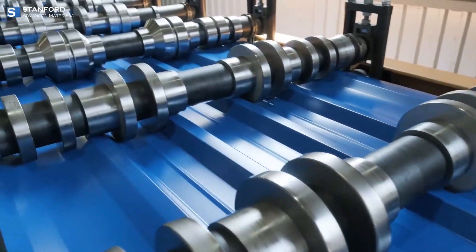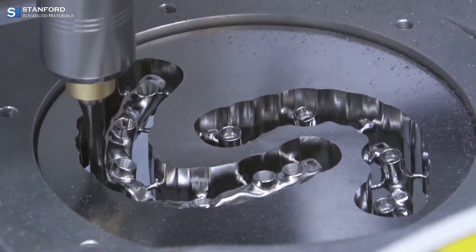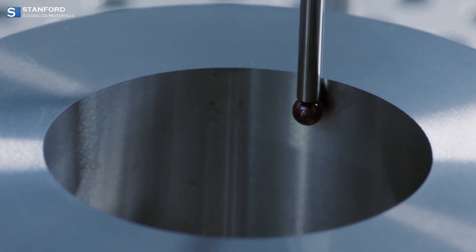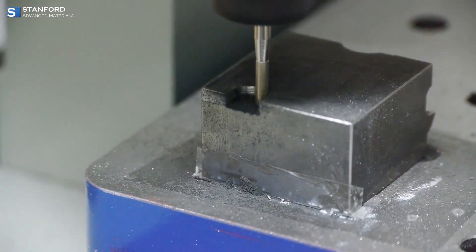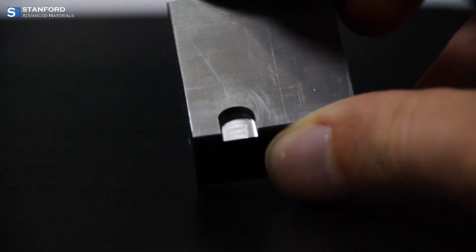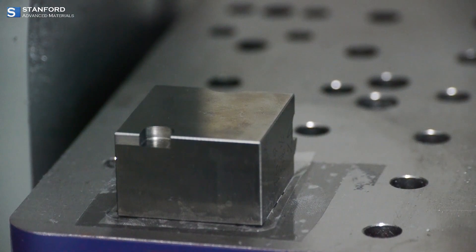Crafting tungsten carbide involves precision and expertise, ensuring the final product meets the highest standards of quality. From carefully selecting raw materials to the intricate manufacturing processes, each step is crucial in harnessing the full potential of tungsten carbide.